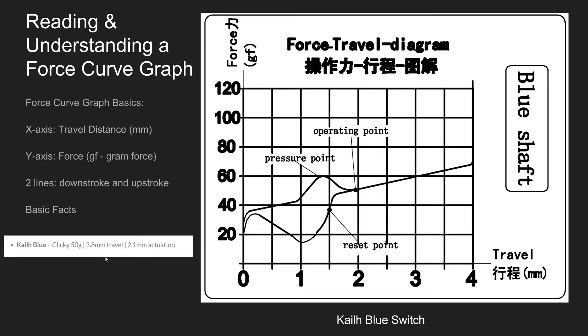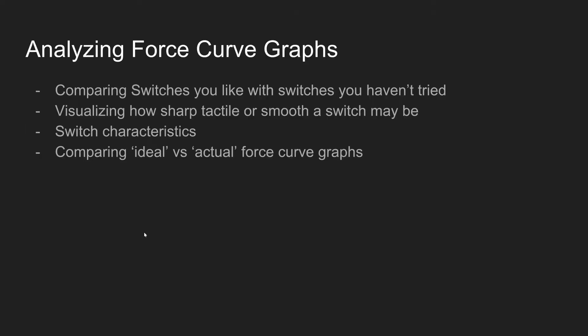Looking at the 3.8 millimeters of travel on the graph — almost 4 — this is where you can see the graph curves up and makes that straight horizontal line, which is where we know we'll be bottoming out. 2.1 millimeters of actuation means at about 2.1 millimeters we're actuating, but the graph has us actuating at just before 1.9. So it's really important to compare the switch's force curve diagram versus the spec sheet. This will help you compare switches you like with switches you haven't tried, visualize how sharp, tactile, or smooth a switch may be, and compare an ideal versus an actual force curve graph.